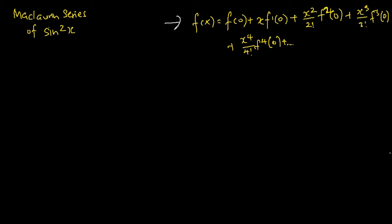So the Taylor series formula tells us that a function can be expressed as an infinite series called the Maclaurin series. And today we are going to evaluate the Maclaurin series of sine squared x up to the x to the power of 4 term.